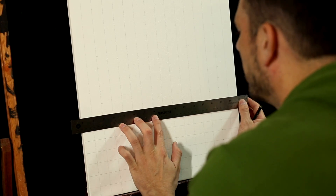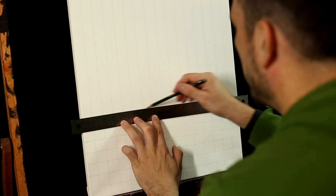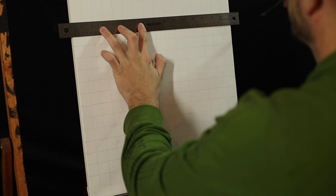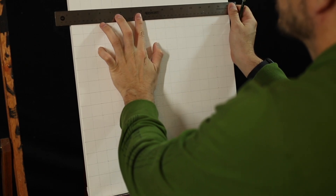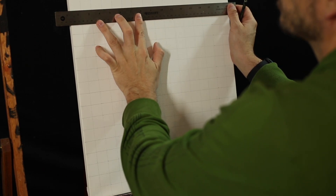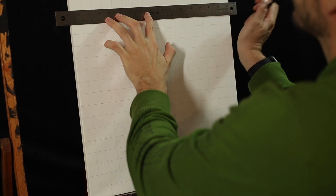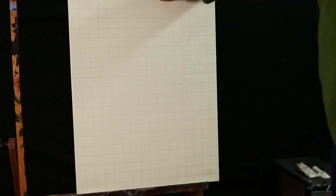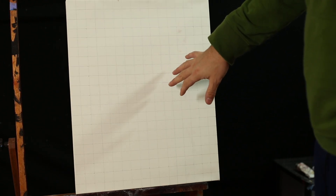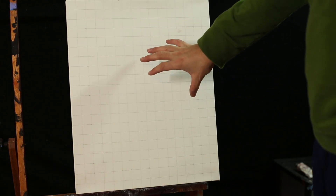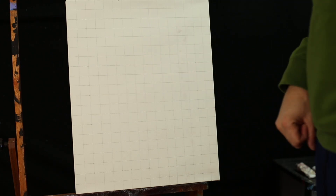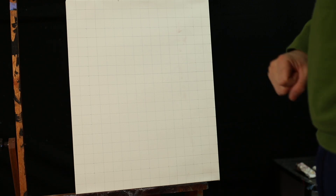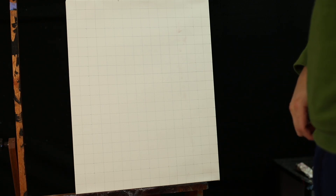The next step — I'll show you how to create your image on the computer. You can see I've got my grid finished; it's all one-by-one inch squares. Now we're going to use this to capture our drawing and make the sketching process a lot easier. Now I'm going to show you how to grid out a photo using Photoshop.